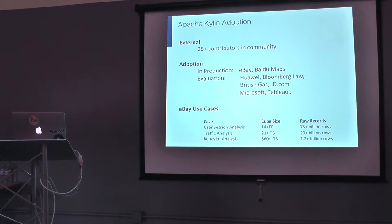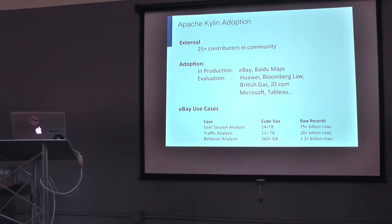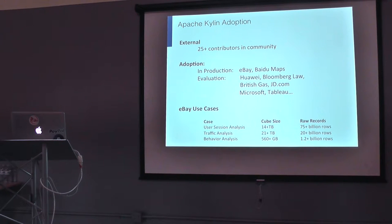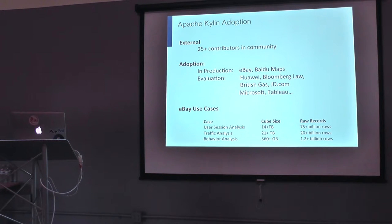We've been actively working with Microsoft to integrate Kylin with their analytics products — Power View, for example — and that is still a work in progress. The biggest cube that we have is 75 billion rows, 14 terabytes in size and growing. We keep close to nine quarters' worth of data within eBay. The traffic analysis is around 20 million rows and the behavioral analysis is around 1.2 billion rows.